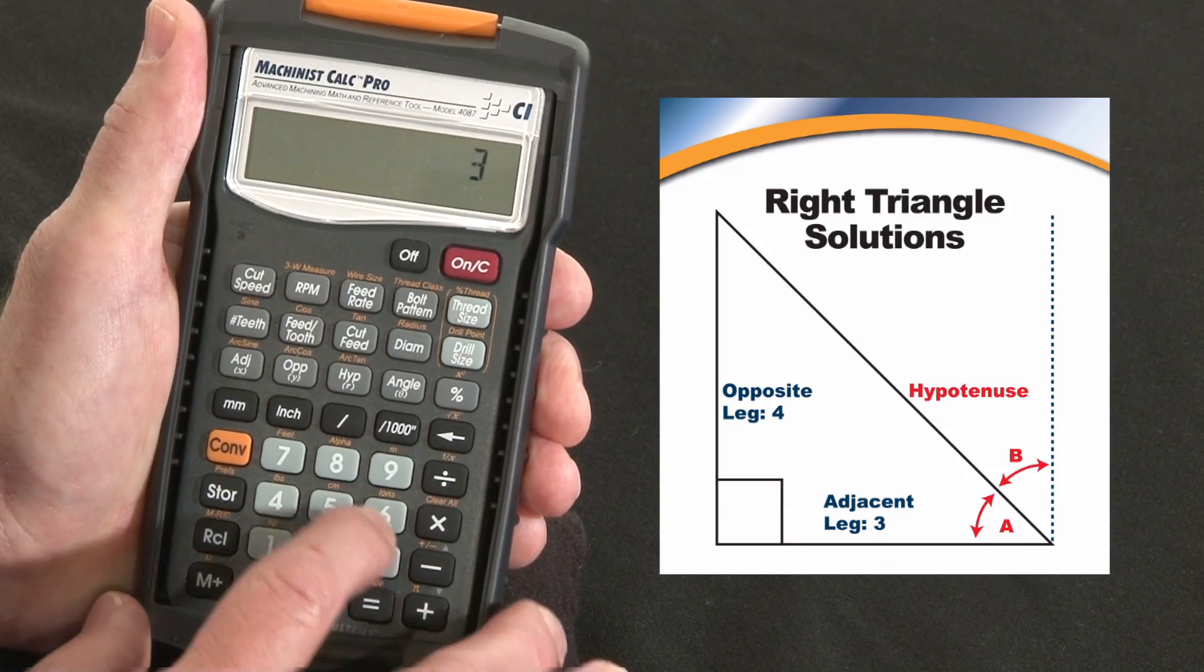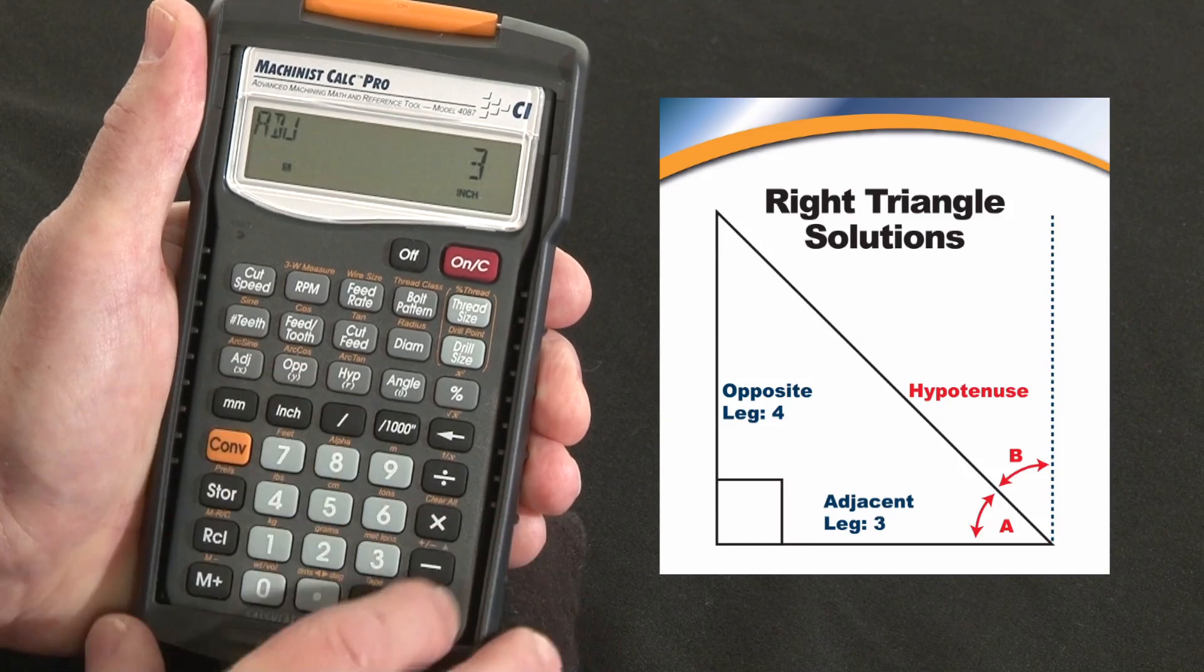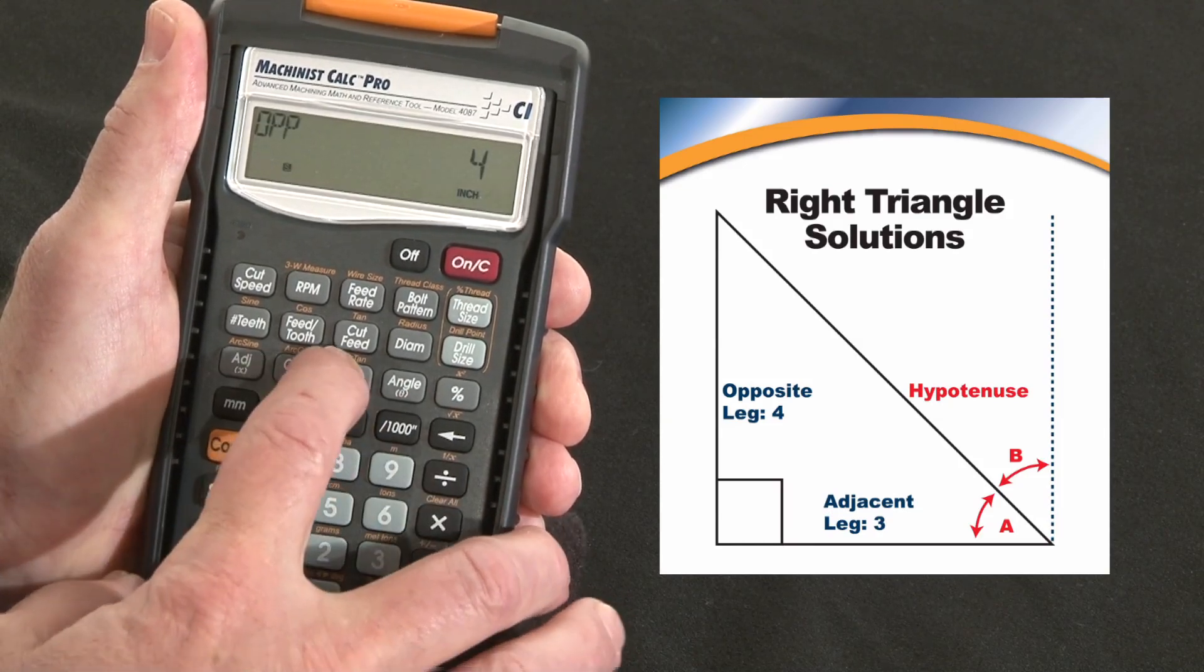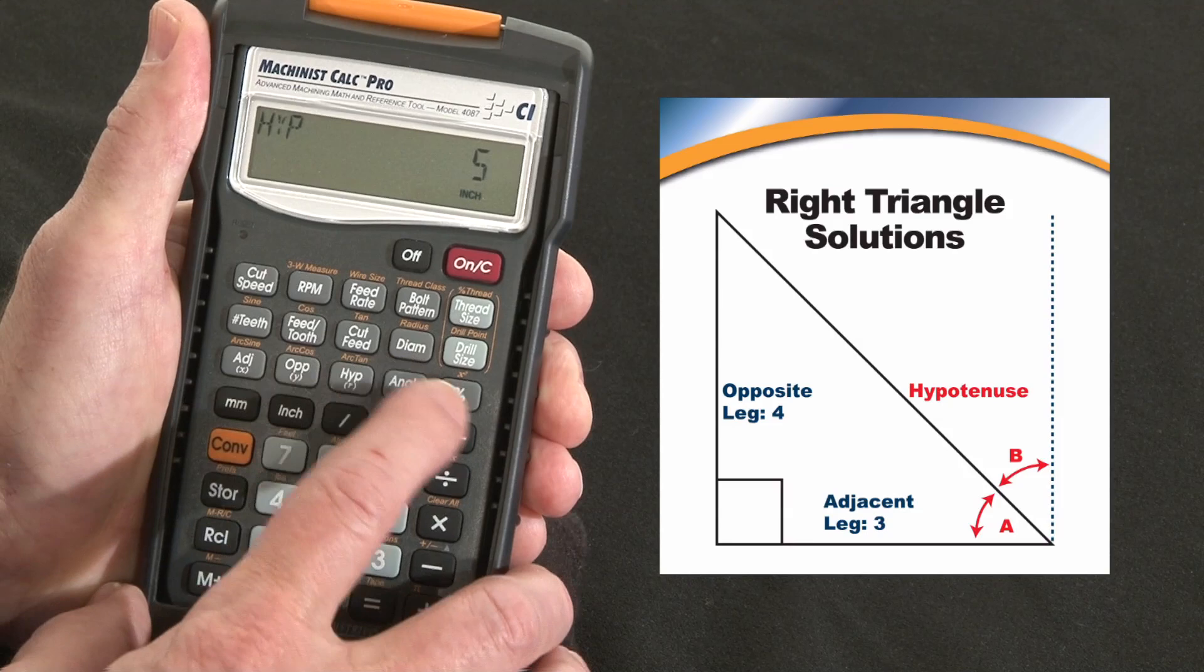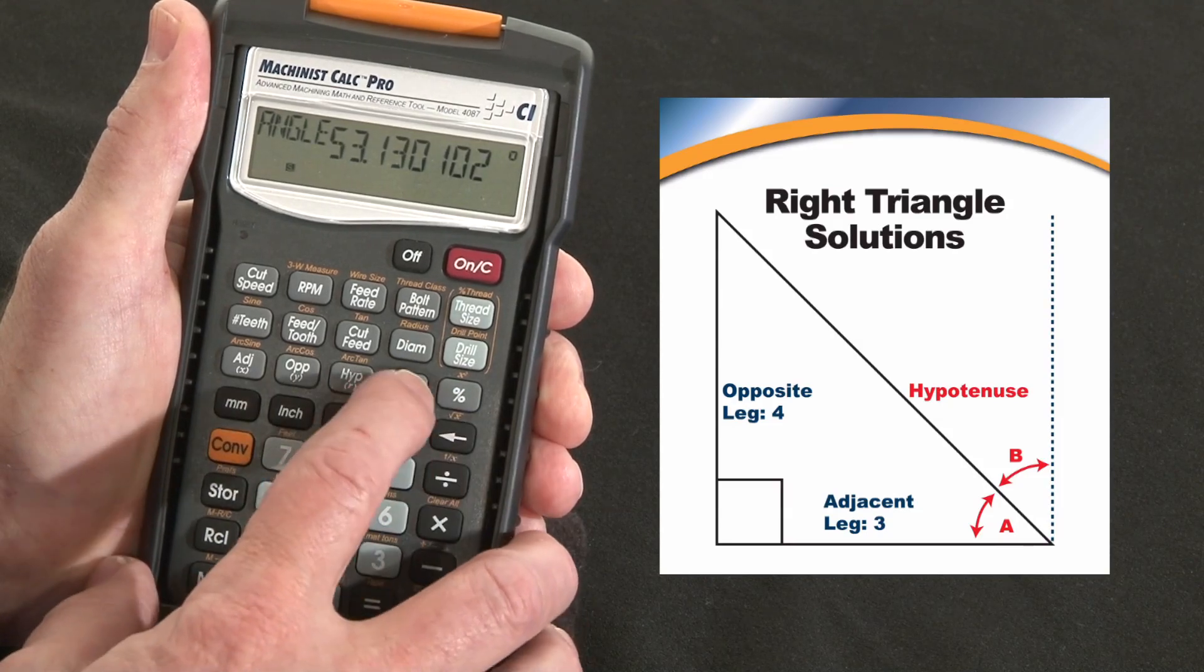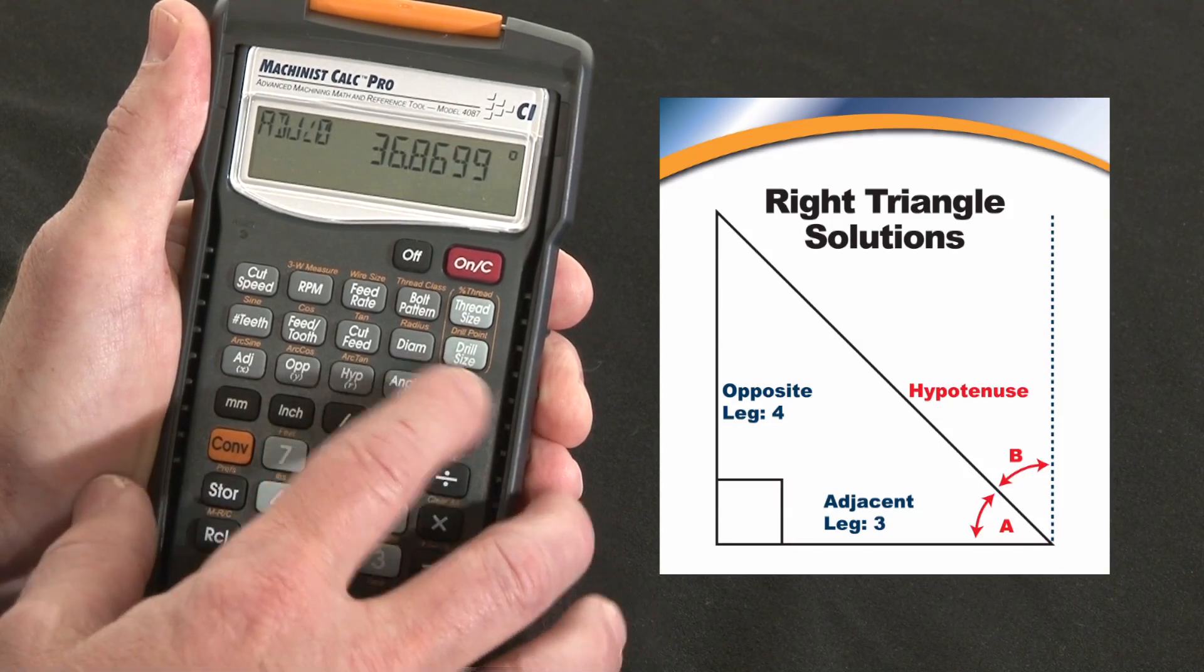Let me do one I know you know off the top of your head. Three inches my X, say four inches my Y, our hypotenuse is going to be five inches, our angle is going to be fifty-three something, the adjacent or complementary angle is going to be thirty-six.